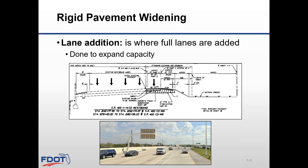Lane addition is where full lanes are added. This is mostly done to expand capacity. In this case, the extra pavement was to add a new ramp lane from the new Salmon Expressway connector to I-4 westbound in Tampa, Florida. You can see the lane addition in the typical section and also a picture at the bottom of the widened lane.